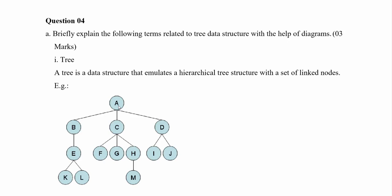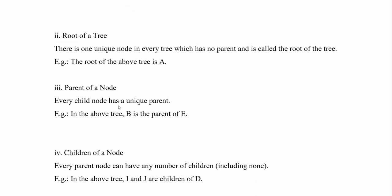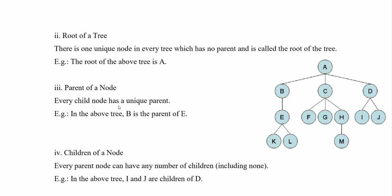Part 2 asks you to write about the root of a tree. The root of a tree is a unique node which every tree has. In this tree, the root node is A. You can give the explanation about the root and mention the root node you have in your own tree diagram. You don't have to draw the same tree diagram; you can draw any other tree diagram, but you have to mention your root node according to your diagram.